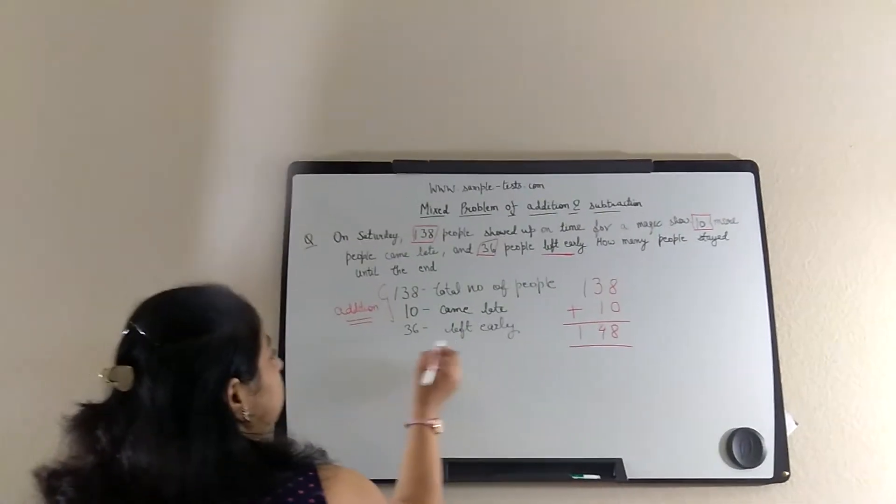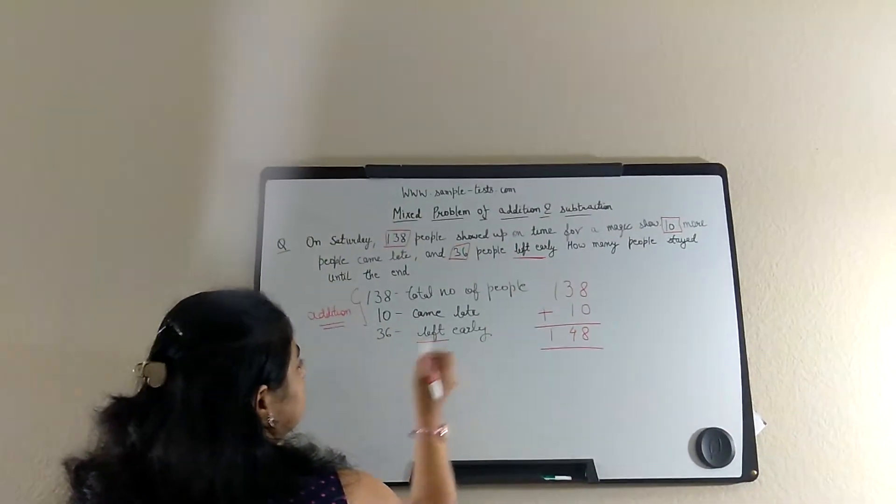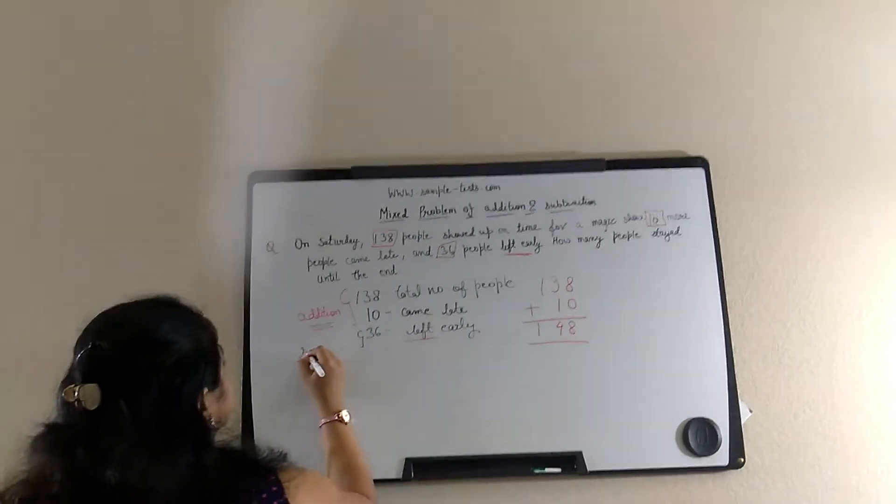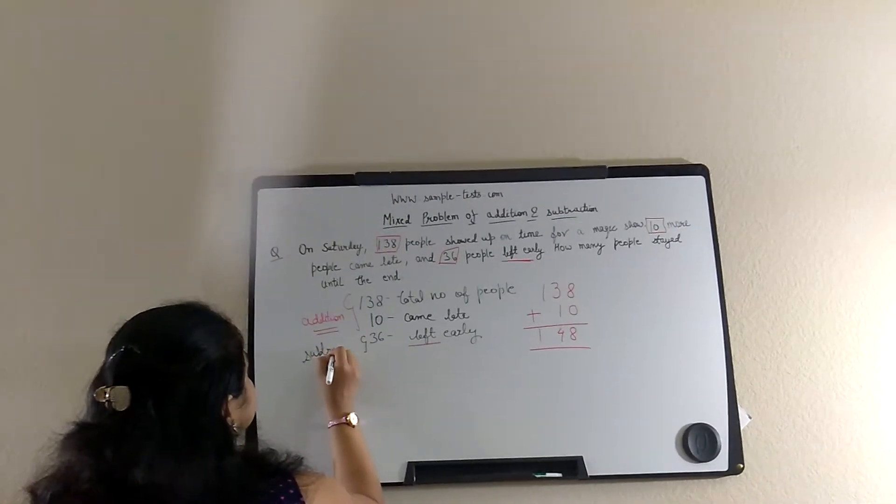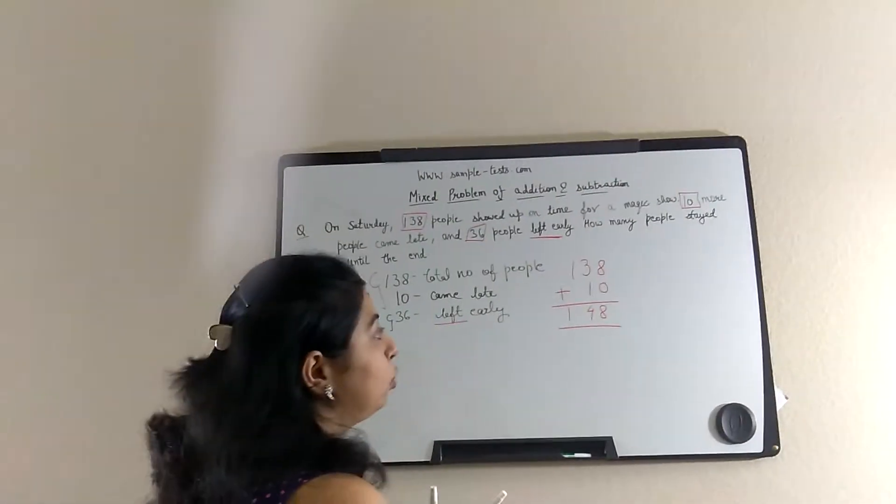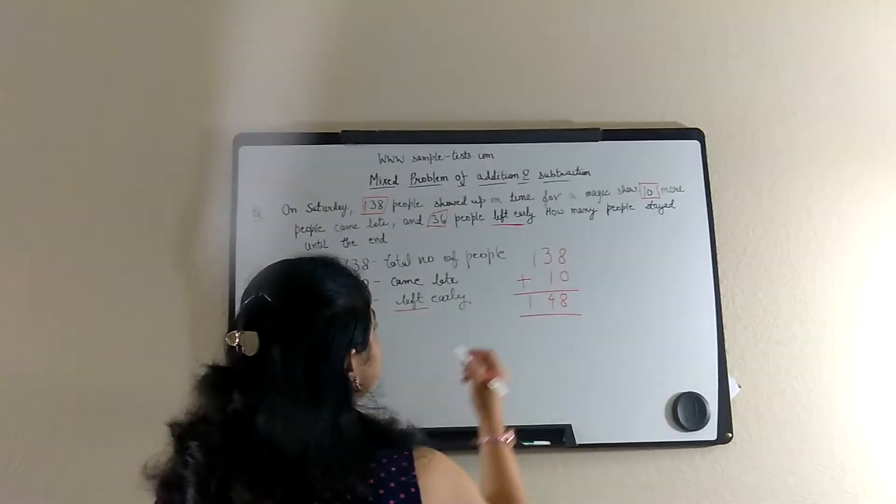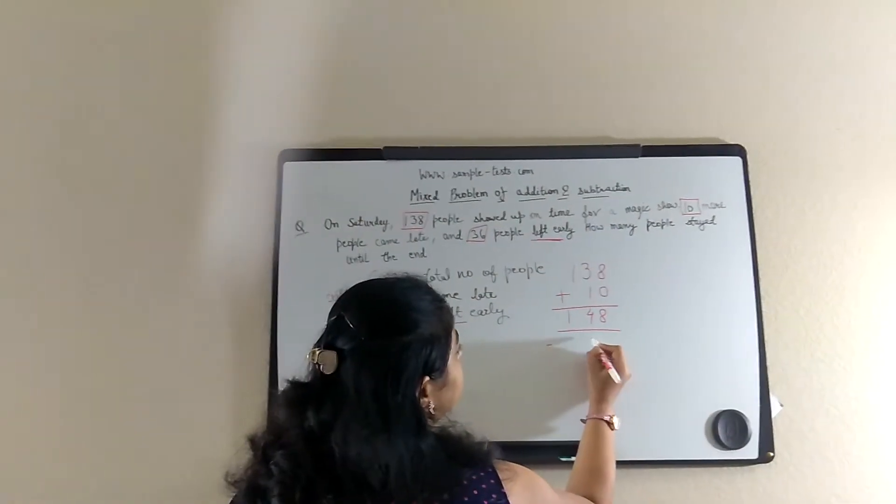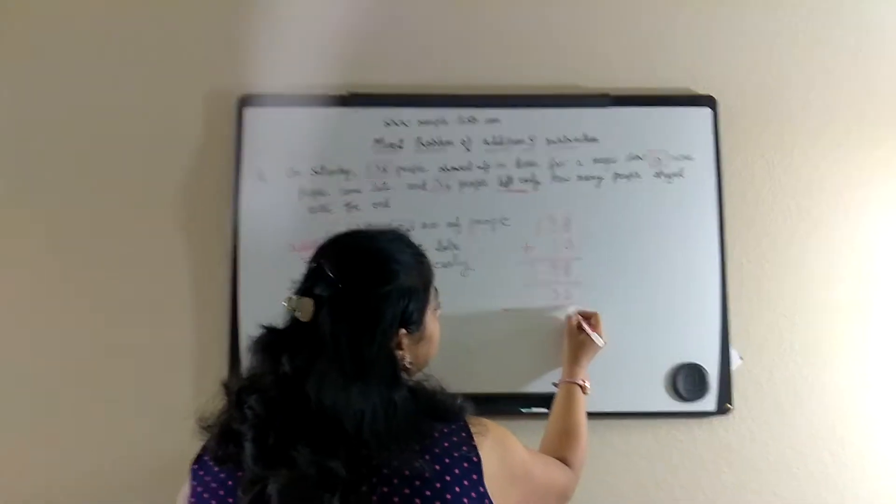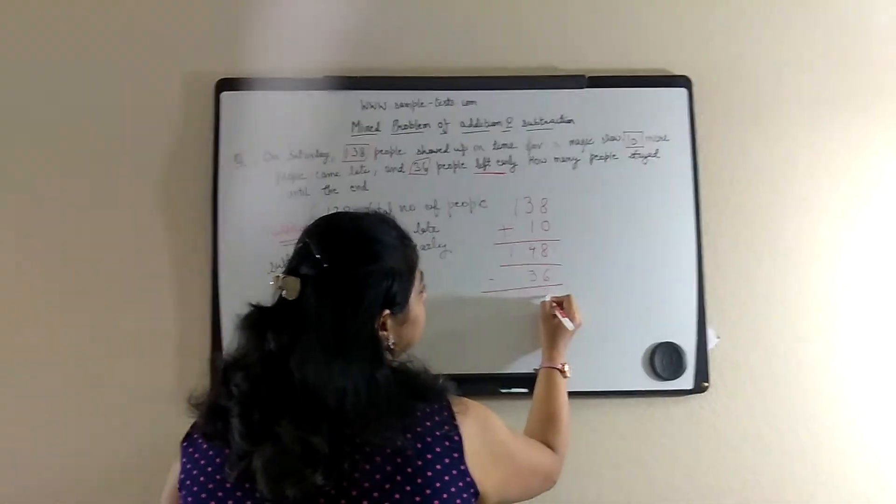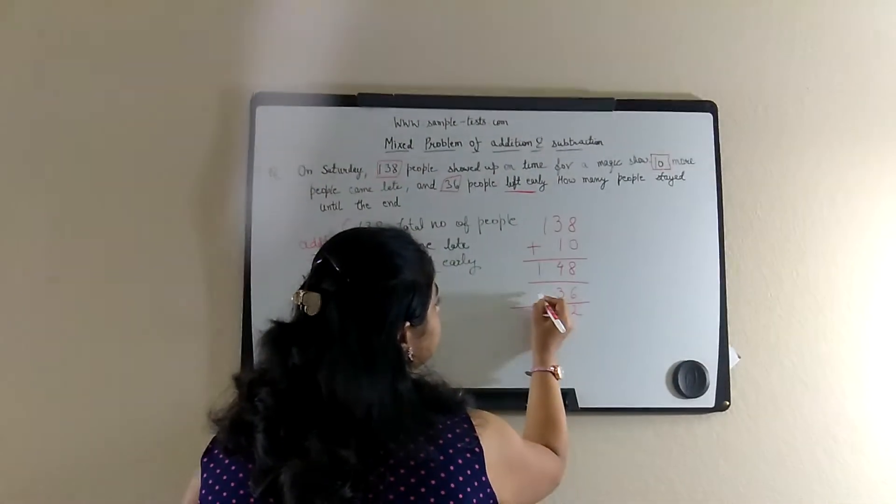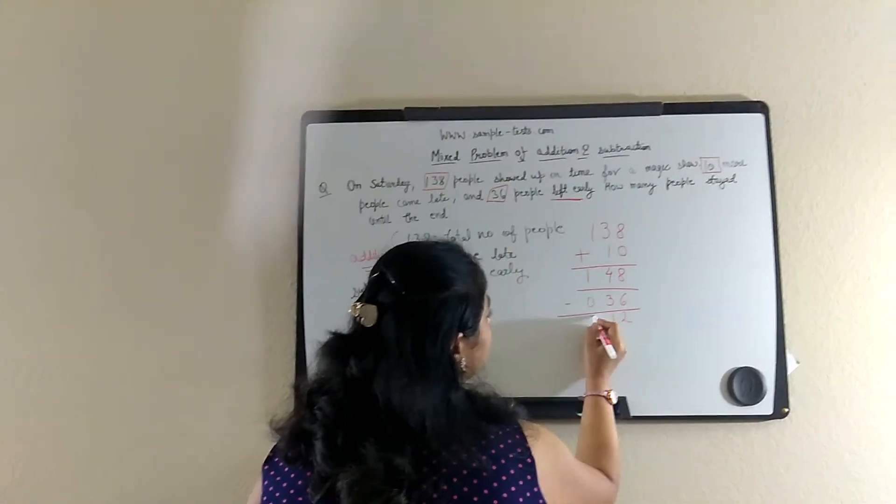Now 36 left, that means you have to subtract here. So now we have to subtract minus 36. So it's 2, 4 minus 3 is 1 and 1 minus here nothing is there so 0, 1.